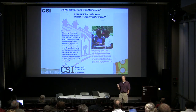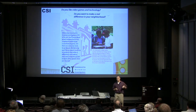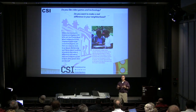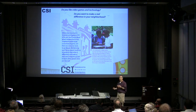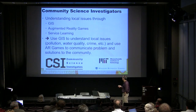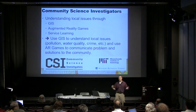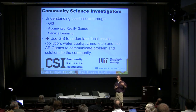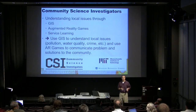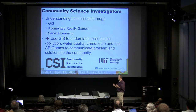Community Science Investigators is a project based both here and in Missouri, with parallel sites. We're starting with three sites this year in each place, moving to six sites next year. They're in-school but after-school — two teachers at each site run after-school clubs for their students. The goal is to engage students interested in issues in their community and ultimately affecting change. It has three components: augmented reality games, GIS, and service learning. The idea is to use GIS to understand community issues — water quality, population, crime — then make an augmented reality game that educates the community, and then affect change through service learning.